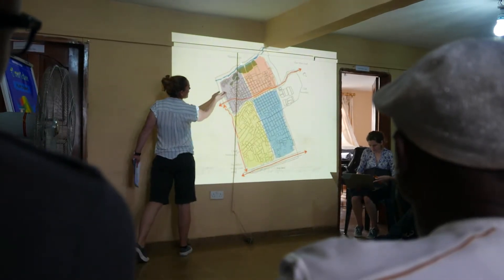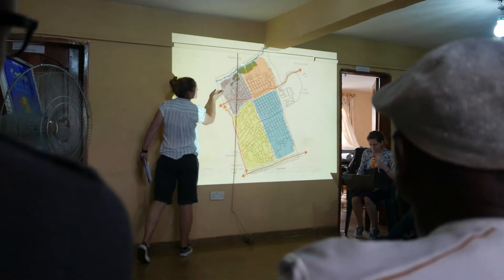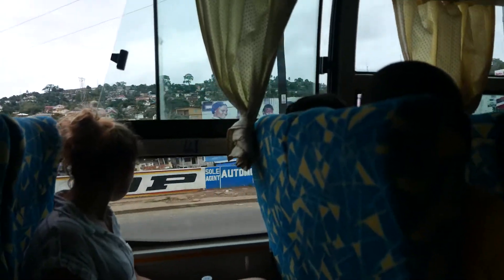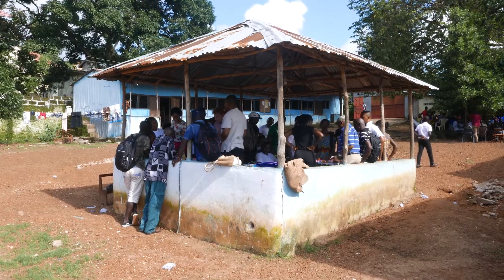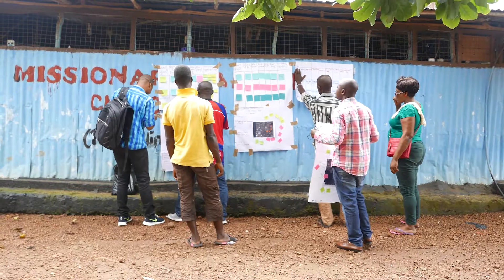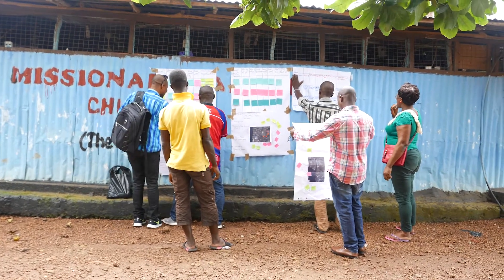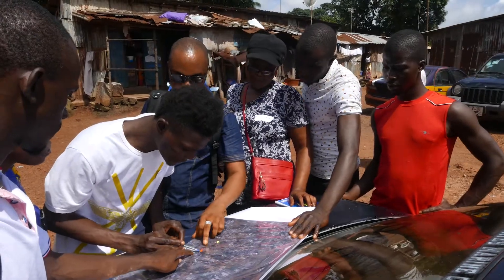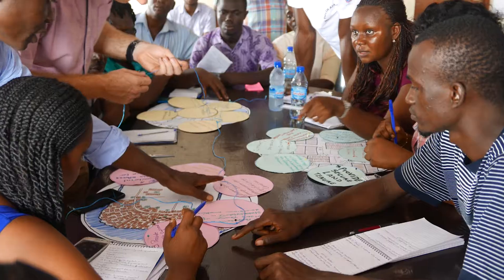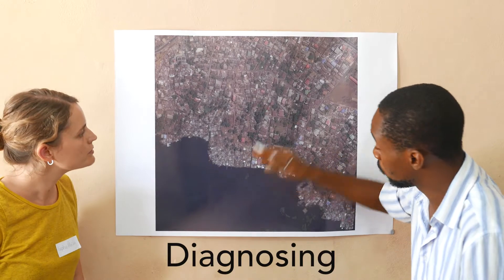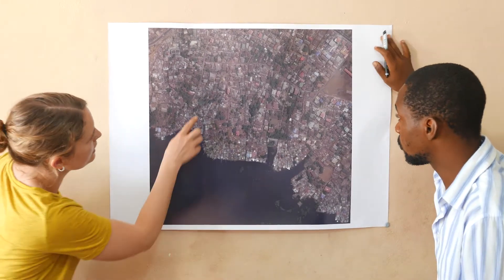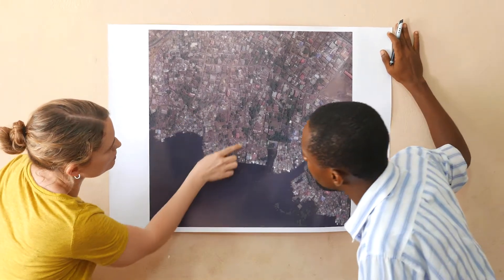Morning preparation sessions were held at the SLAC office before travelling to Kokul Bay, an informal settlement in the city and the workshop's area of focus. The week was split into four stages — diagnosing, dreaming, developing and defining. The diagnosing stage was aimed at understanding the current situation in Kokul Bay, focusing on the problems that residents experience, as well as the potential and opportunities for change.